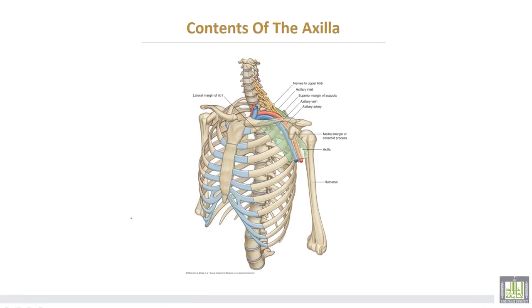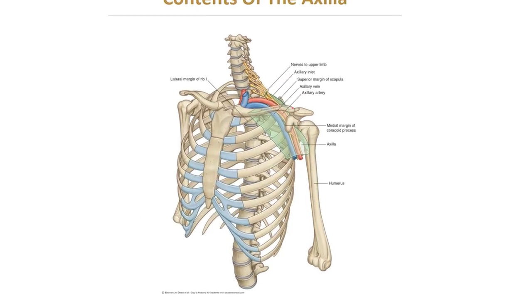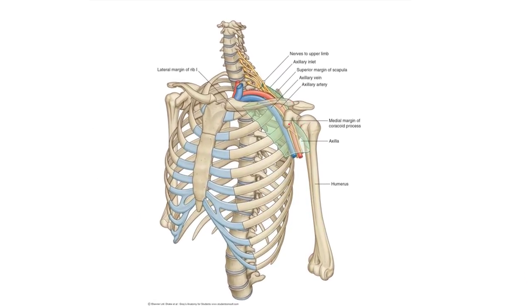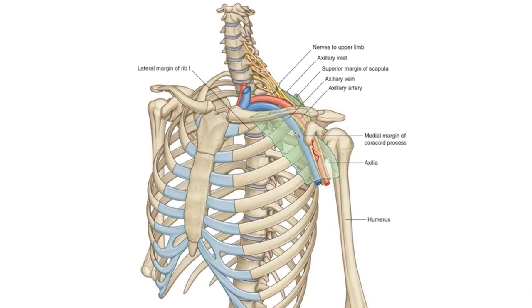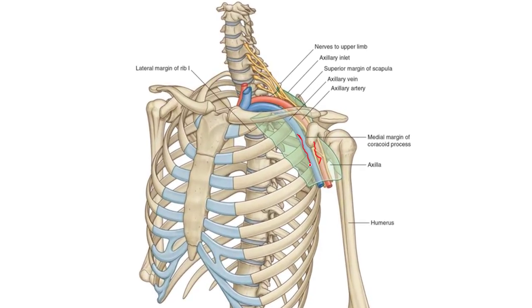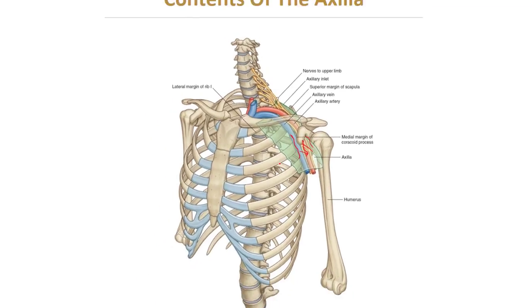This shows the contents of the axilla — the axillary artery, axillary vein, and the cords of the brachial plexus.